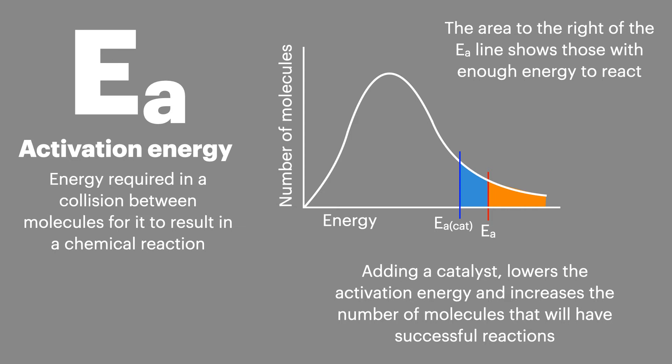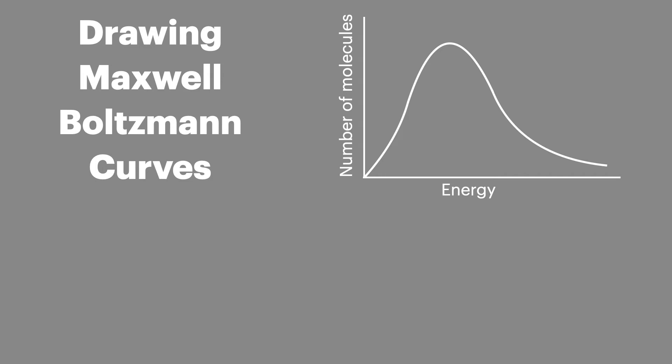Drawing Maxwell Boltzmann curves is a very common exam question, especially on AS level papers. There are four things that you must remember as these often form the marking points for this type of question. First you must remember to label the axes. It's becoming more common to ask you just to add the labels of the axes in a question. Second, always start your curves at zero or the origin.